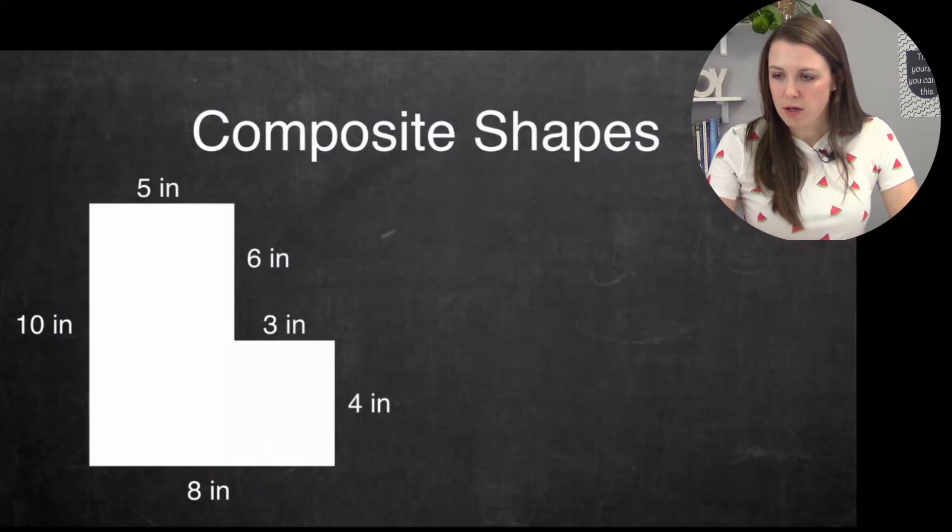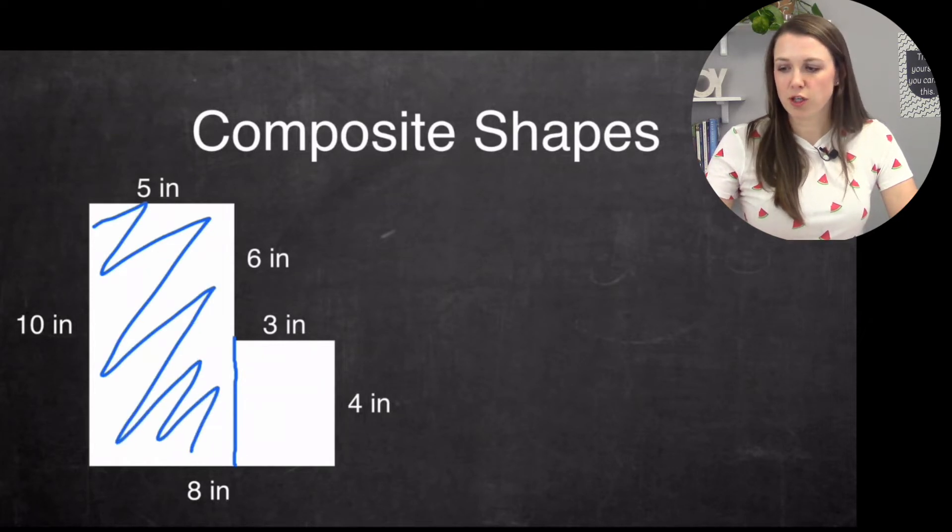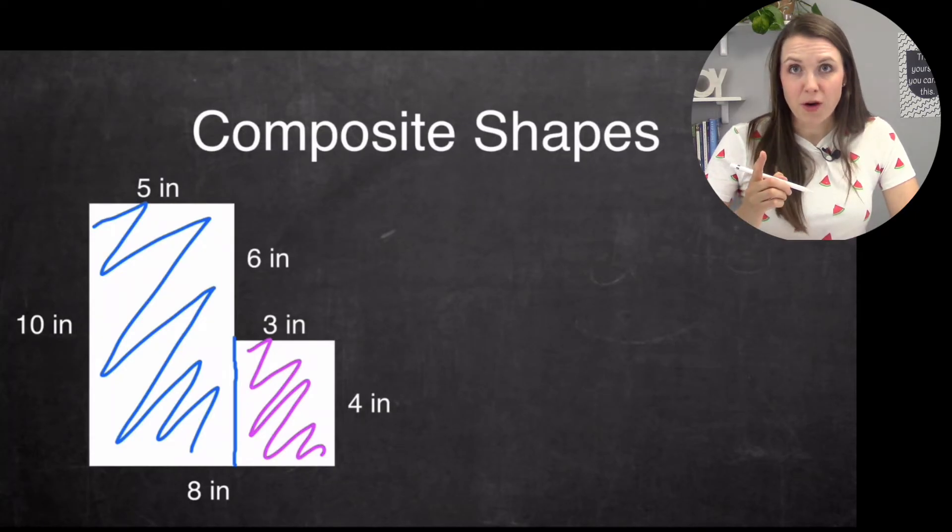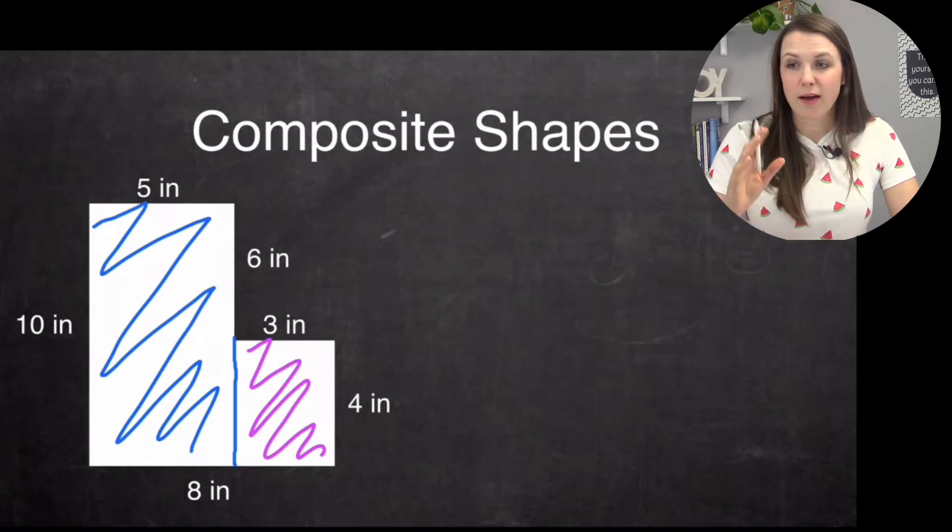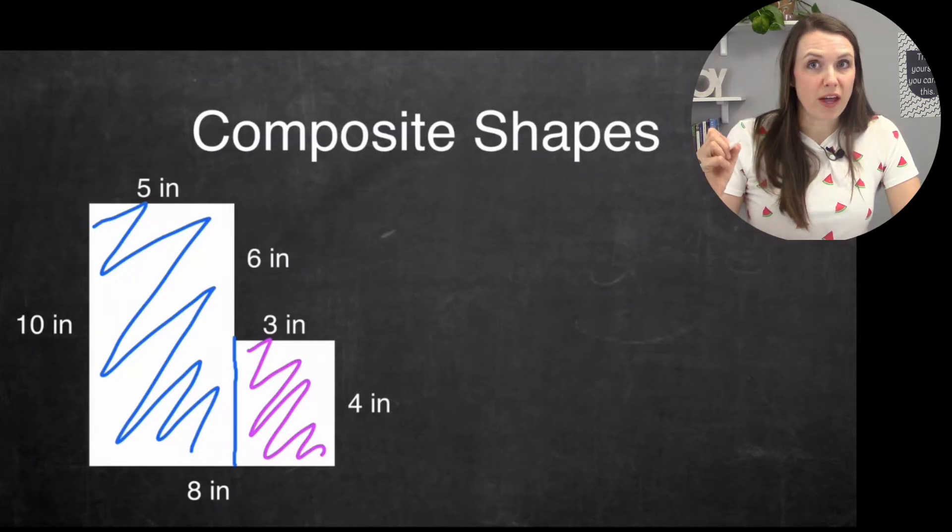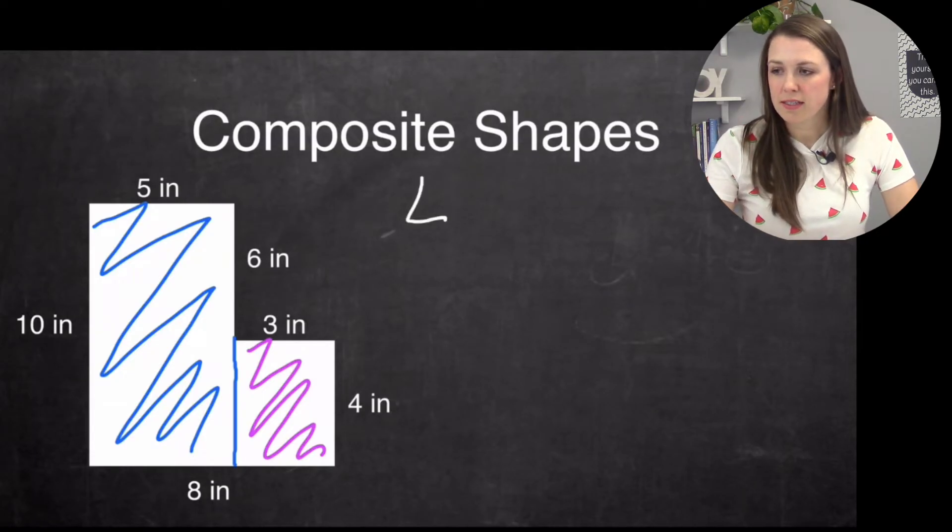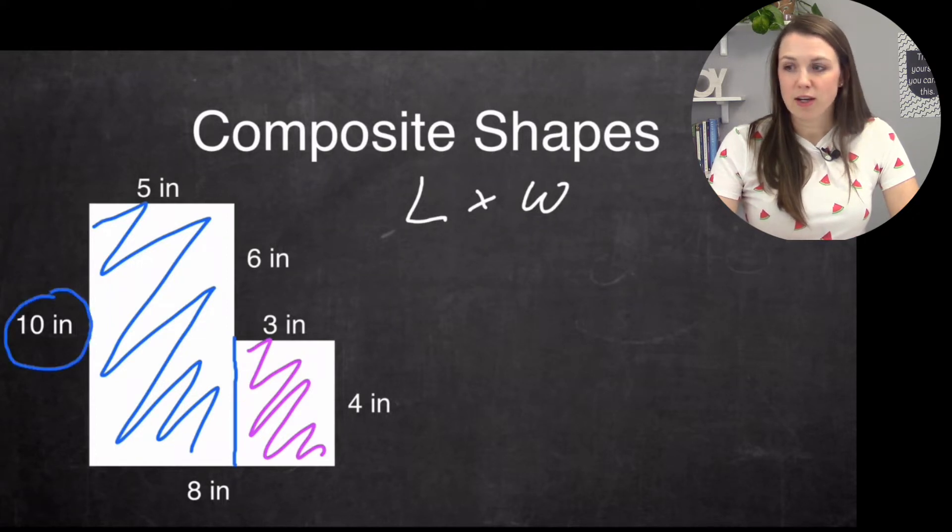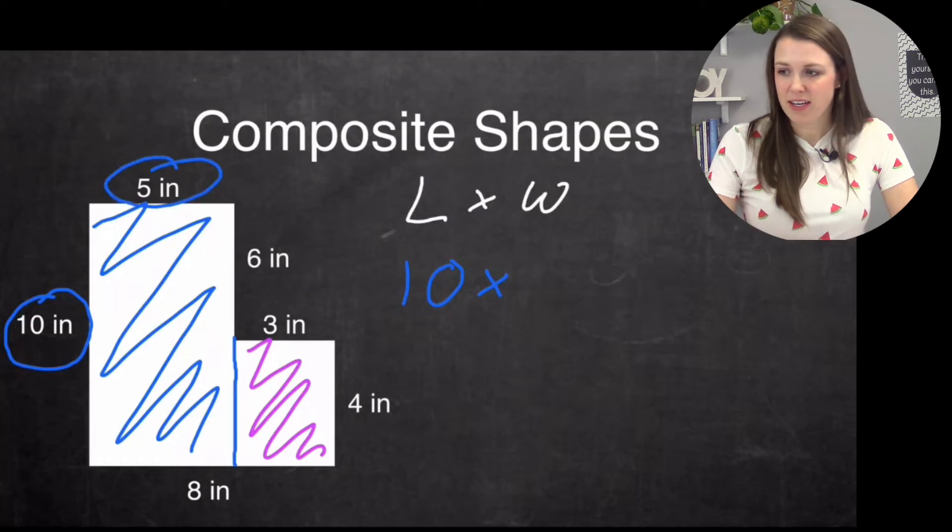So now our plate of brownies is full like that. I essentially have two different shapes. I have this long rectangle, and then I also have this shorter rectangle. So if you remember, the way to figure out a rectangle is basically length times width. Let's take a look at this blue guy right here. So my length here is 10. So I'm going to go 10 times my width. And my width here is five. So I have 10 times five. And what is 10 times five? 50, right?